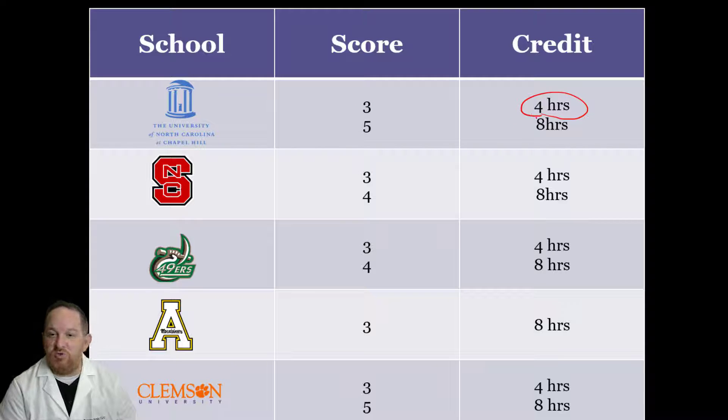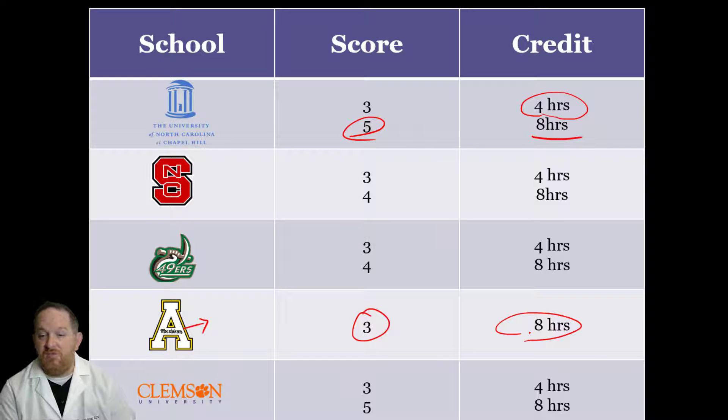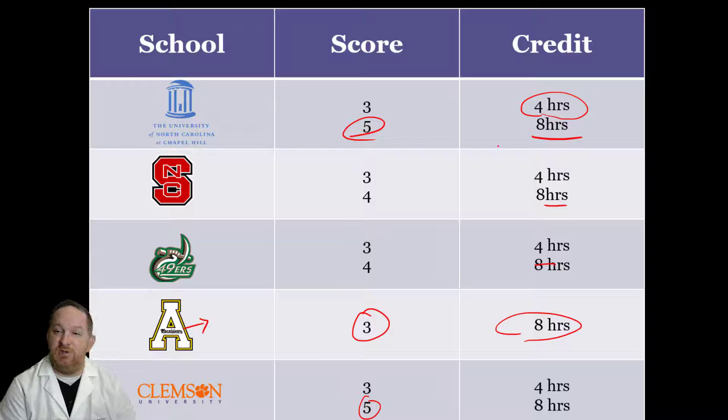At Chapel Hill, for example, if you get a three you get four hours of college credit. That's roughly one or two classes. If you get a five you'll get eight hours. The winner is App State here. If you get a three, which is the passing score, you get eight hours of college credit for biology. Four at Charlotte and NC State will get you eight hours, but it will take you a five at Clemson and Chapel Hill to get those eight hours of credit. There's a lot of reward in the college credit for doing well in the class and on the exam.